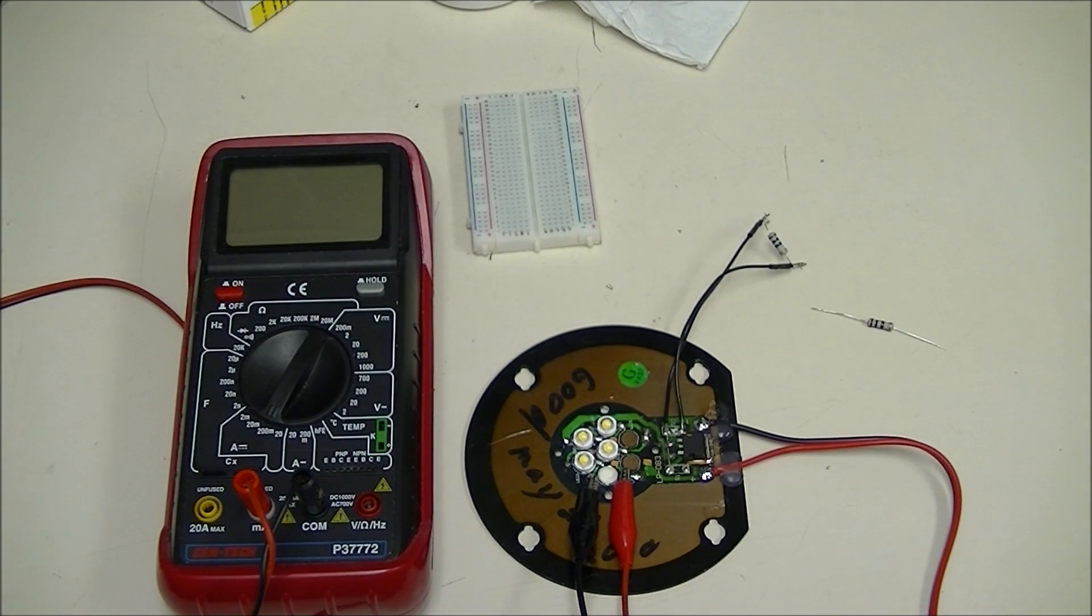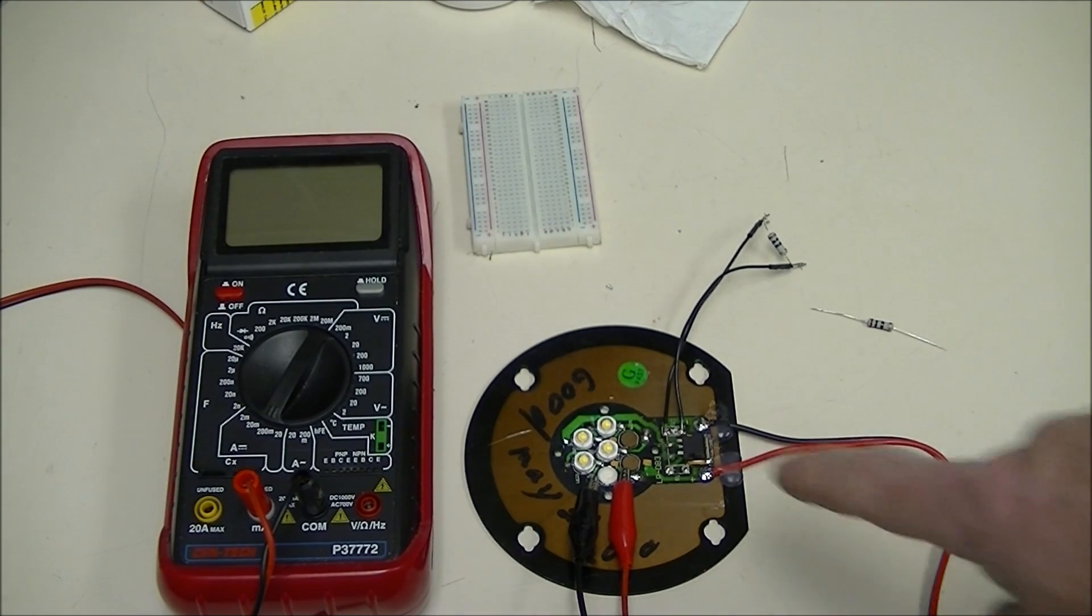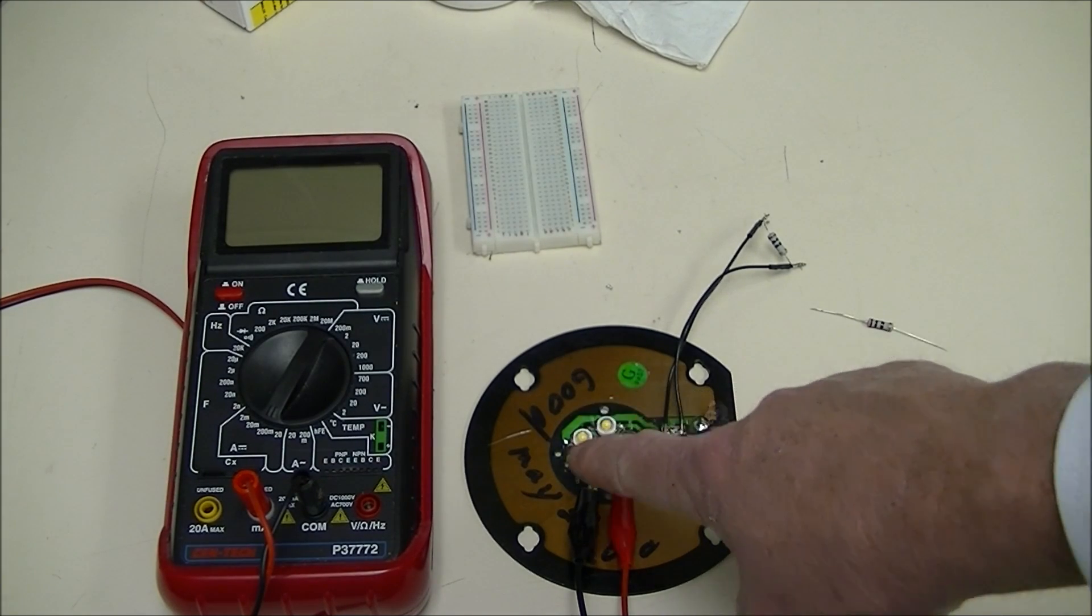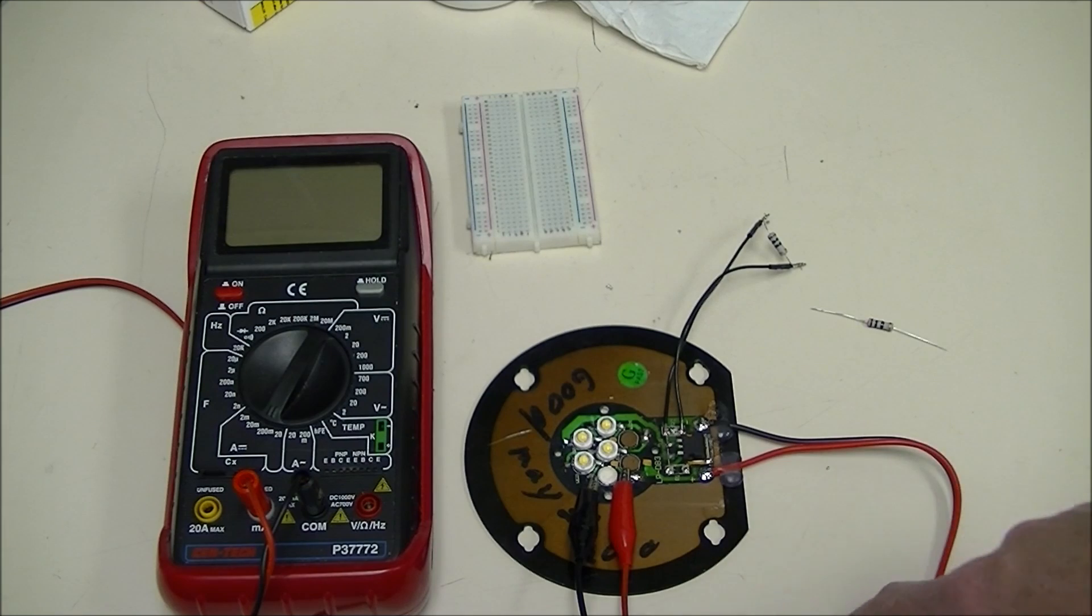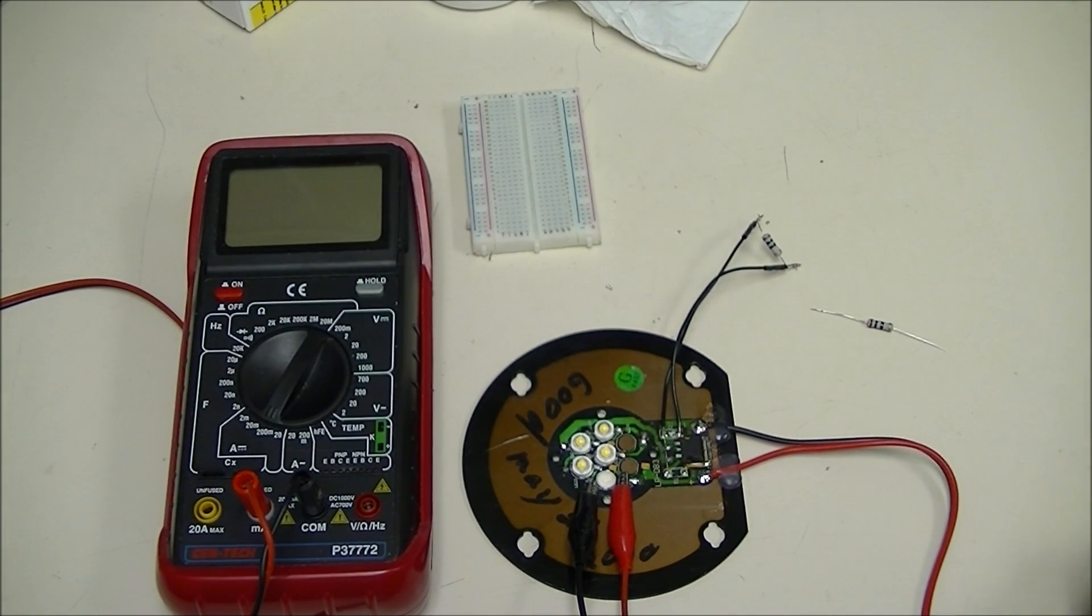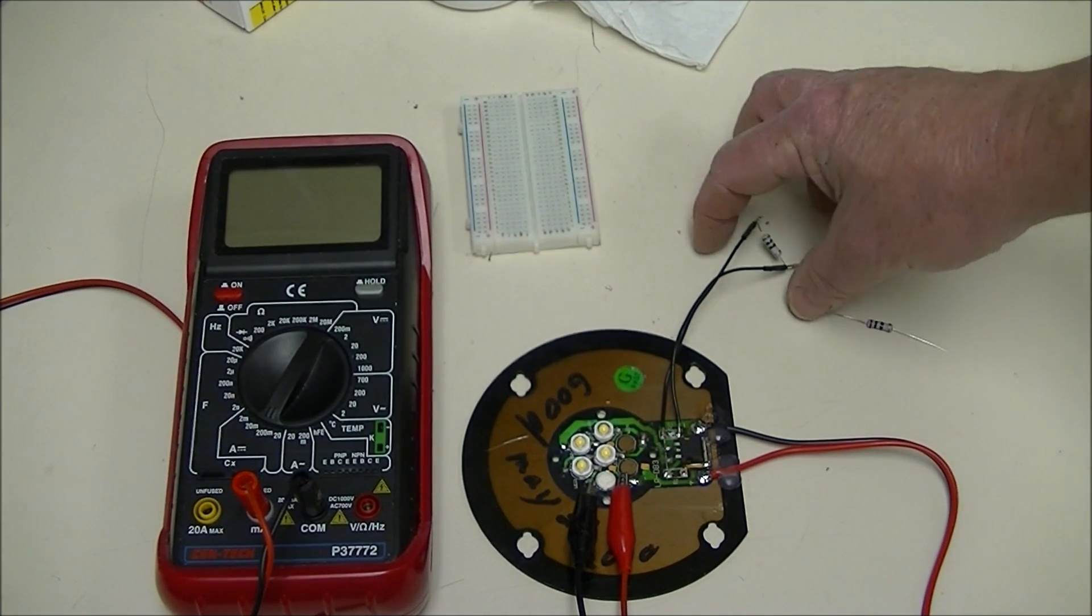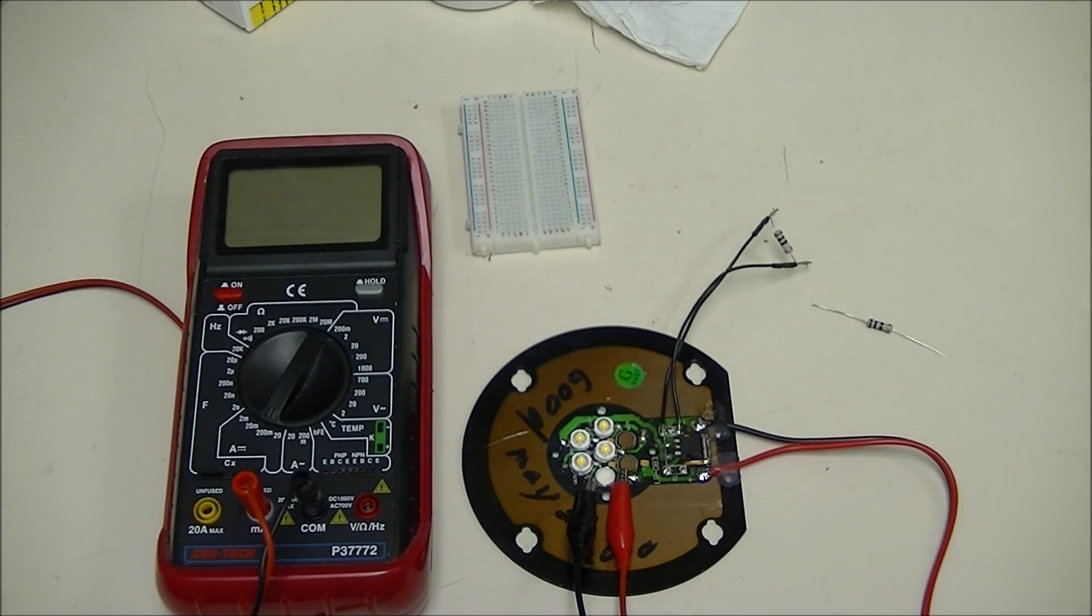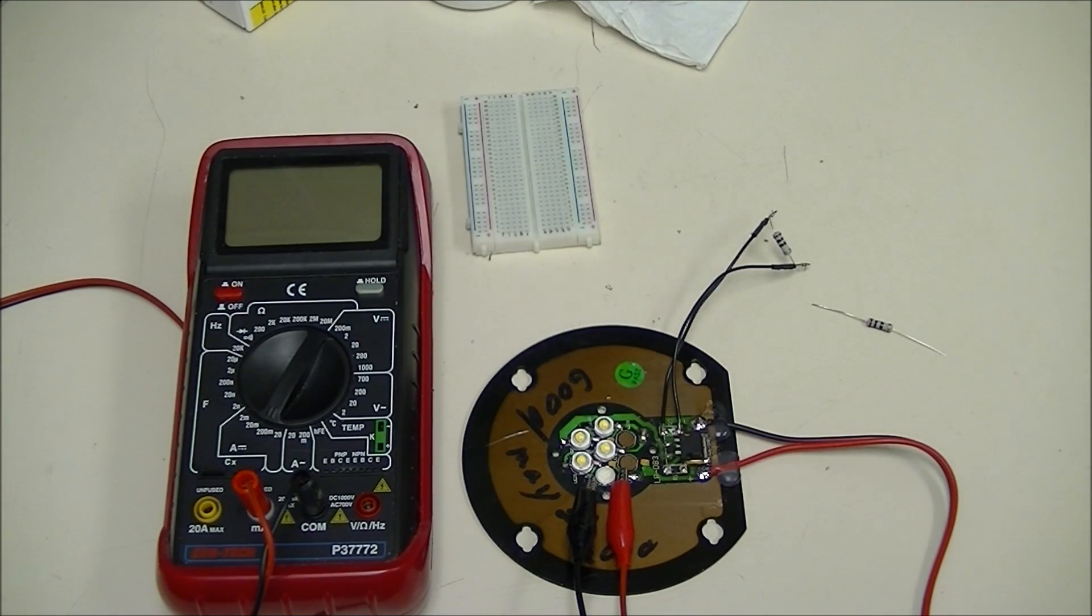What do we have here? We have four LEDs wired in series on a heat sink. This is an LM317 being used as a constant current source. This is a 10 ohm resistor. The 10 ohm resistor determines the current flow through the circuit.